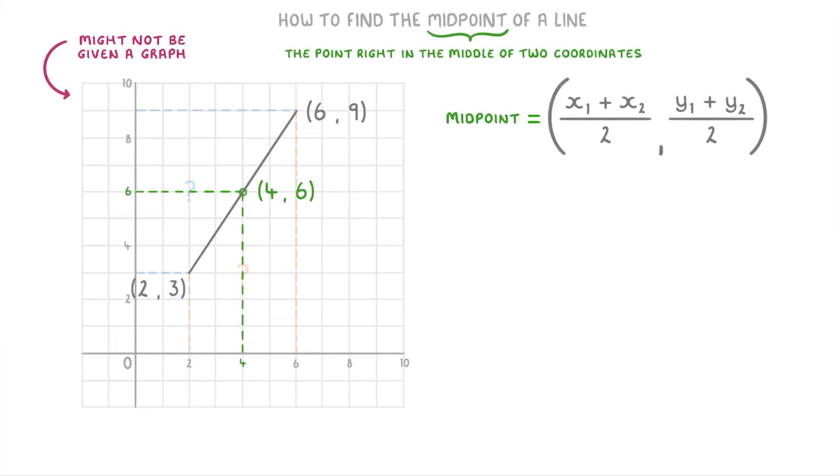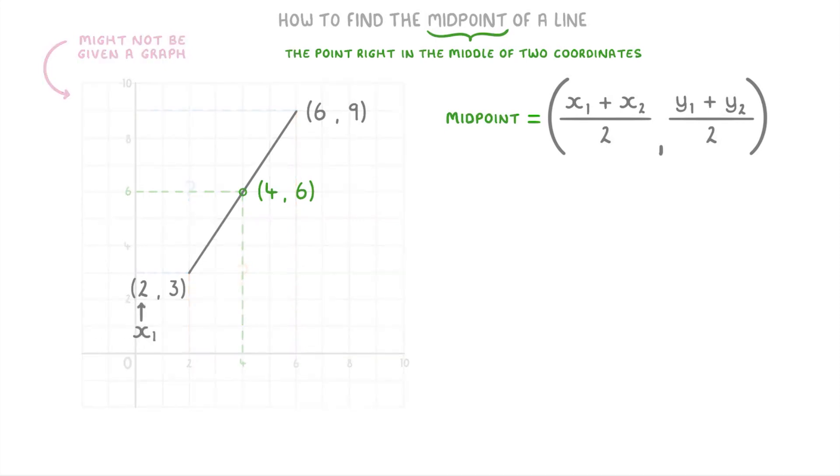But before we can use it, we need to label our two points. So we pick one of them to be the first, and label the coordinate x1, y1, and the other point to be the second, and label the coordinate x2, y2. Although it doesn't matter which point is the first and which point is the second.